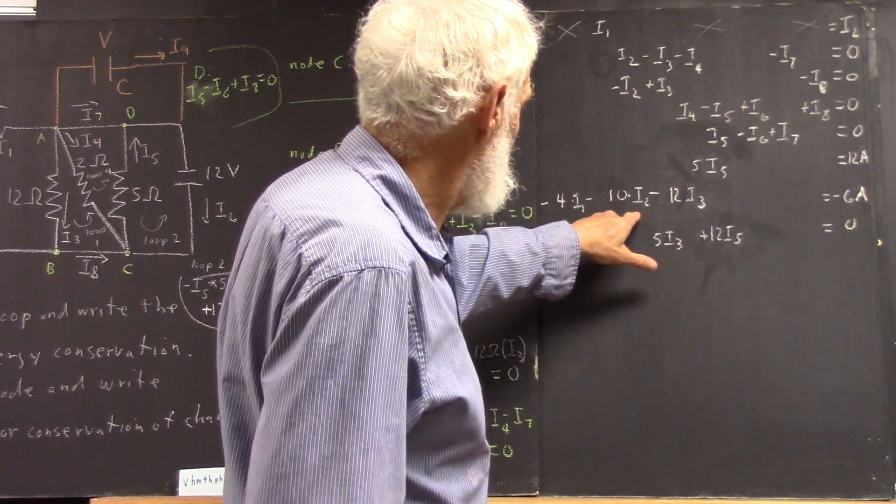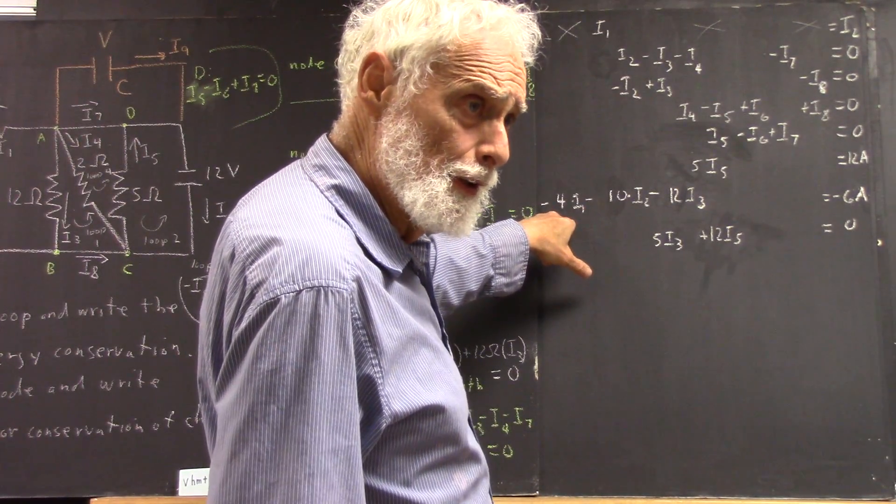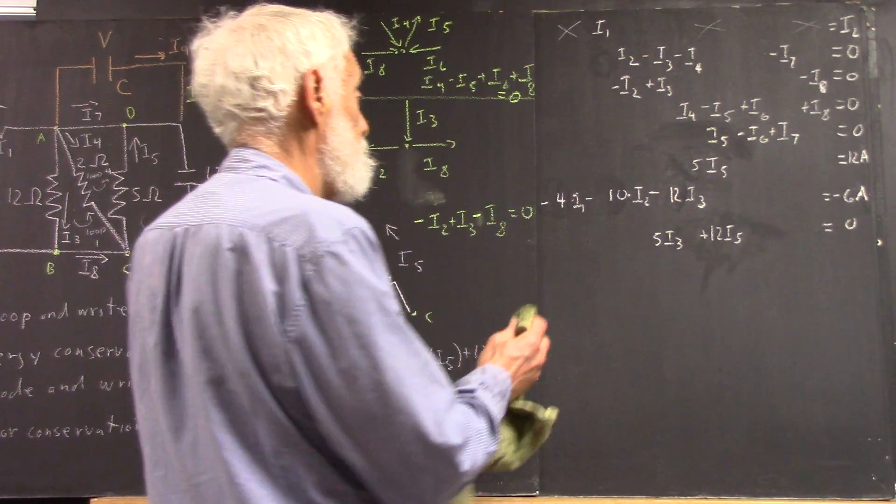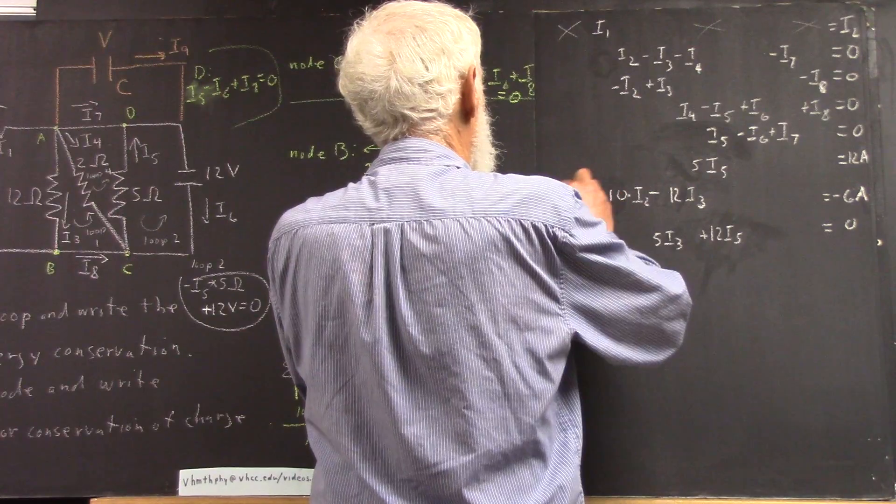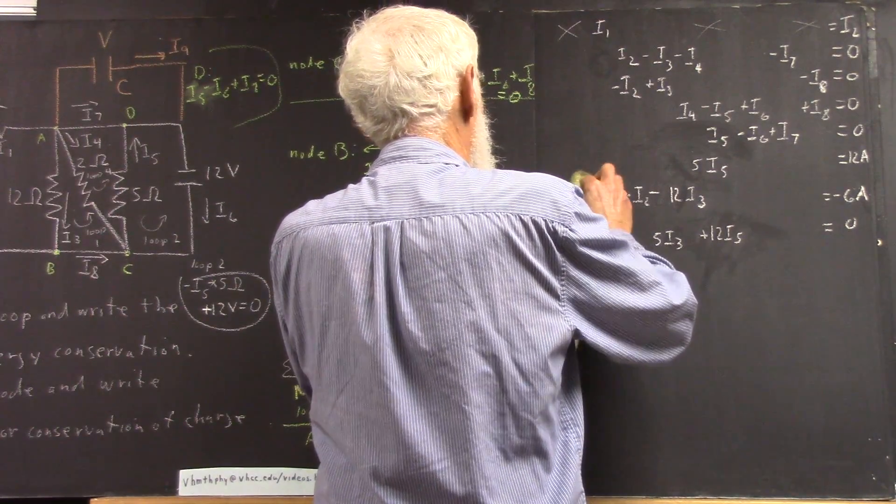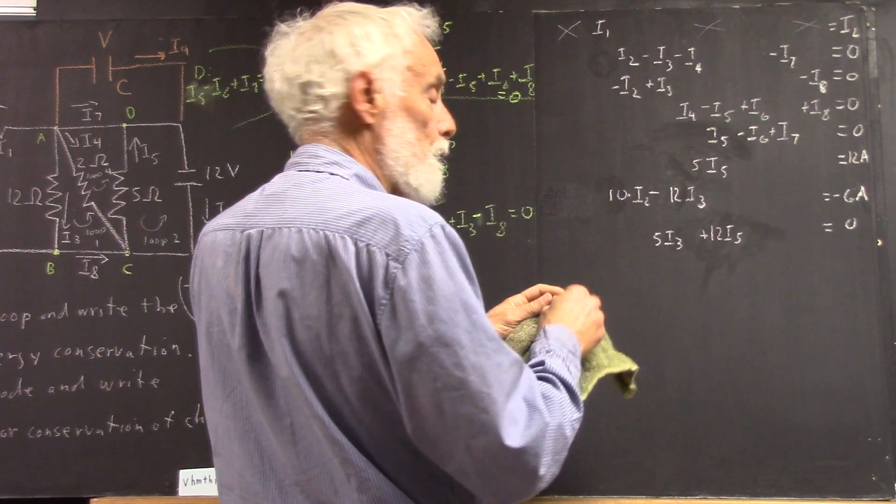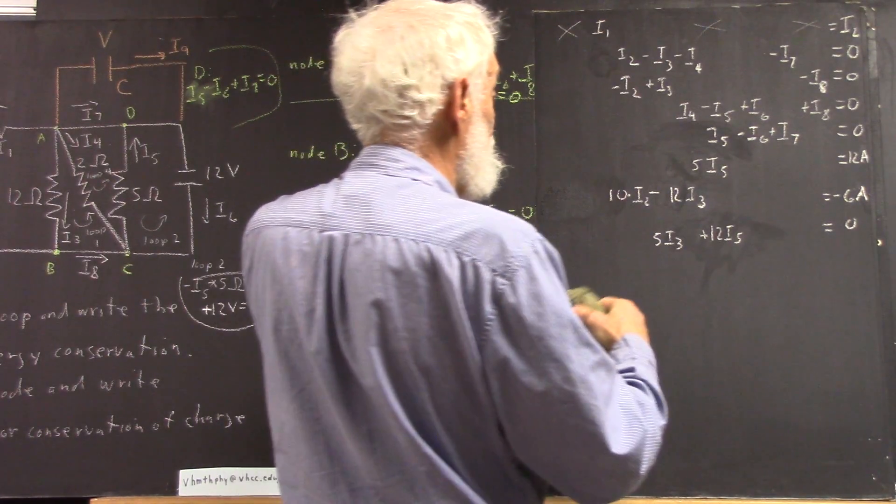Now, of course, we've got an I2 here. We've still got an I1 here, right? But an I1 is the same as an I2. So, that's going to give us 14 of these, right?